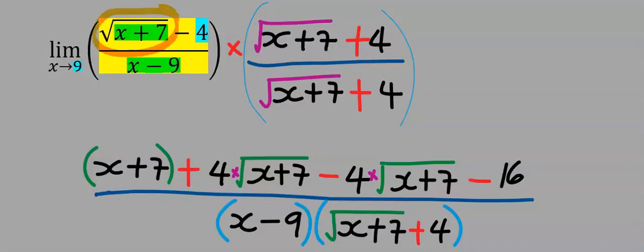Next, square root of x plus seven we multiply by 4, and we're going to have 4 multiply square root of x plus 7. Minus 4 multiply square root of x plus 7, and we're going to have minus 4 square root of x plus 7.